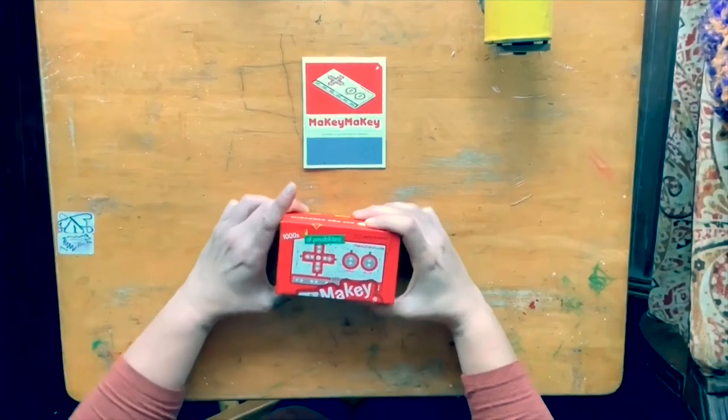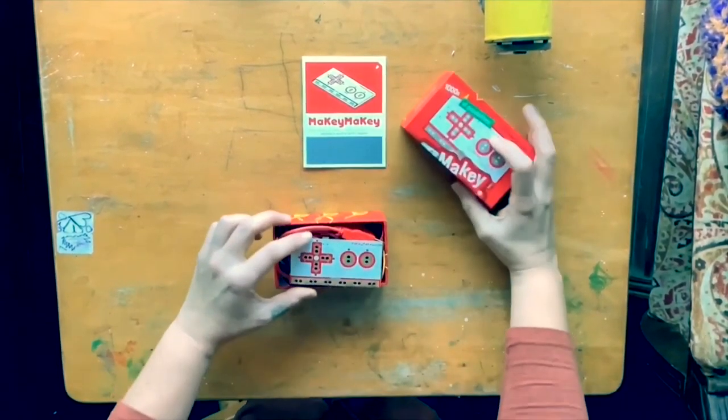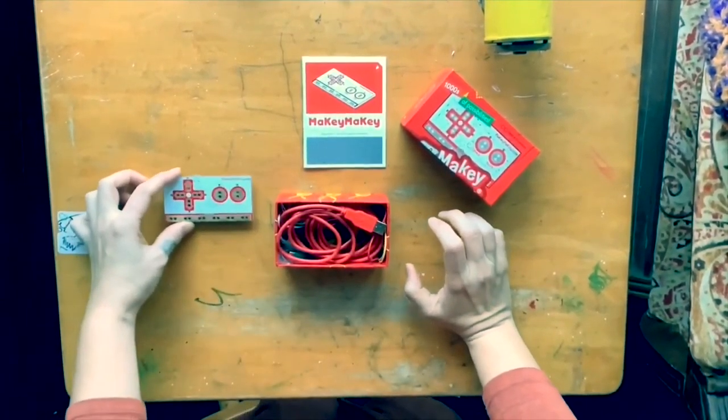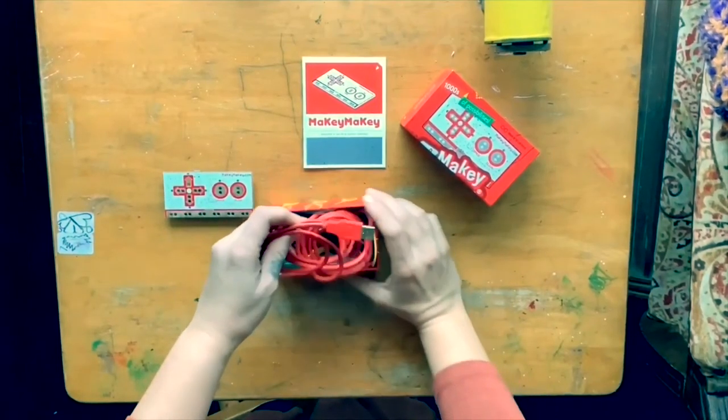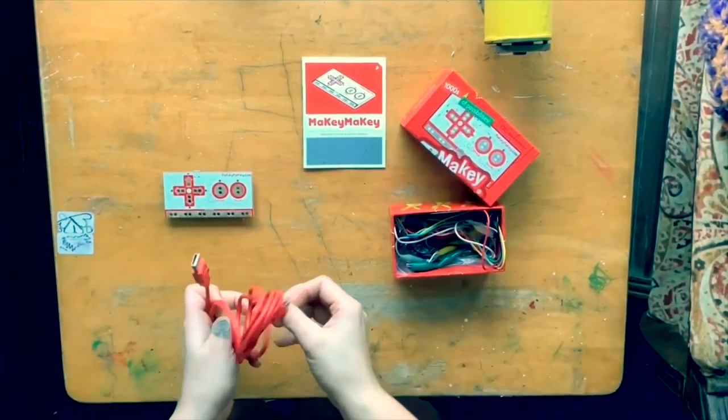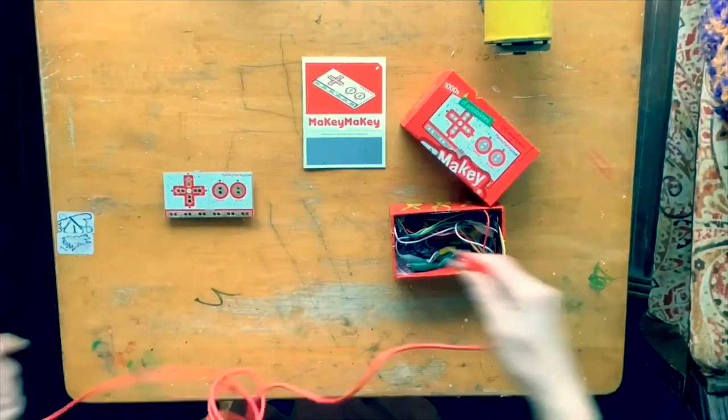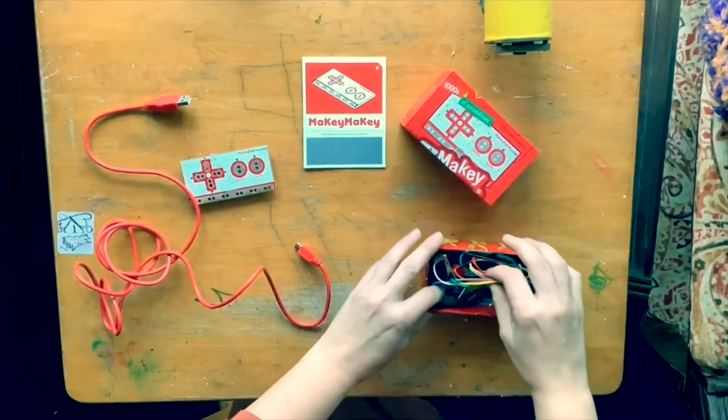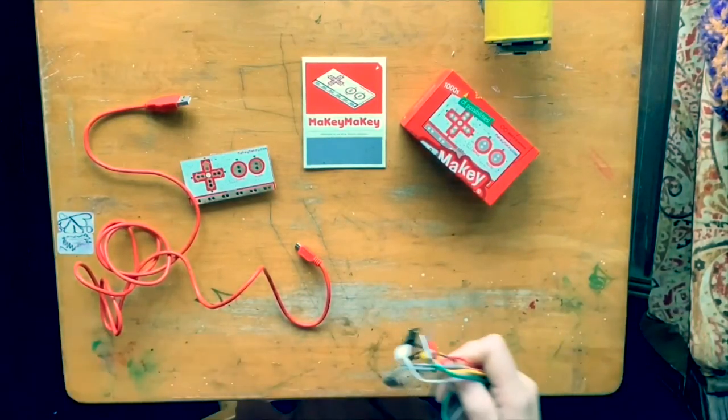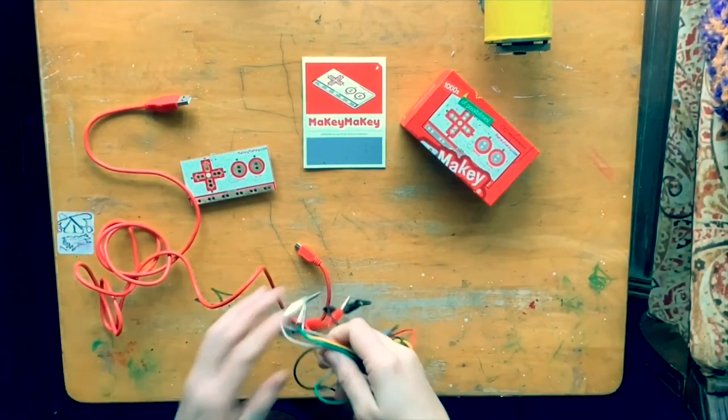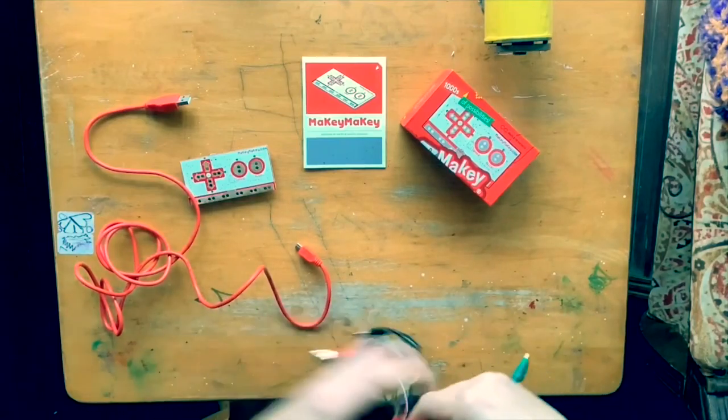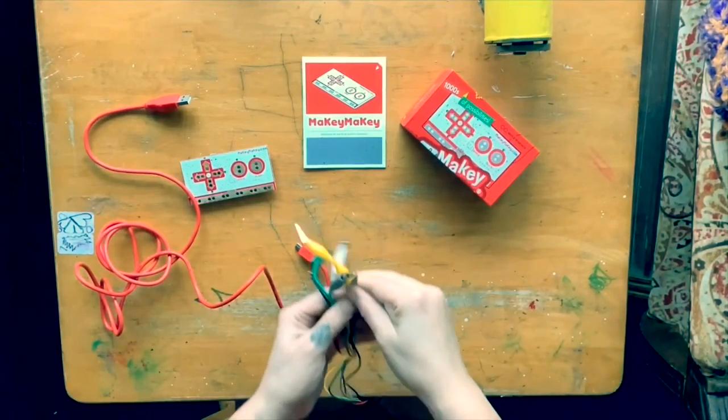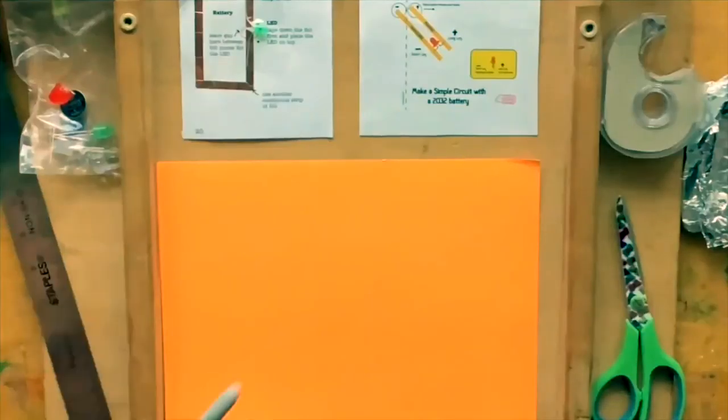Let's talk about Makey Makey. A couple of guys called Eric and Jay over at MIT decided to make it because they want the world to be a construction kit, and everything around you to be used for inventing. Makey Makey is a circuit board that you plug into your computer and it acts like a keyboard. Each metal pad you see on the Makey Makey is a conductive touchpad. That means the touchpads can be connected to other things to invent whatever you can dream up.